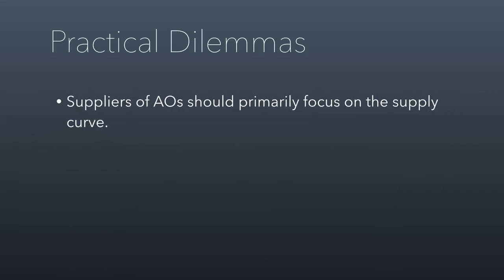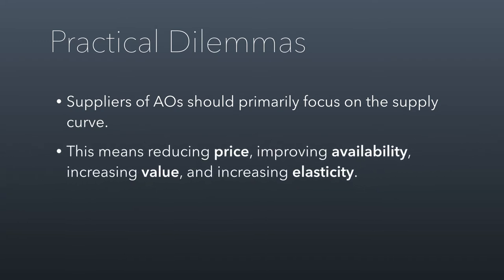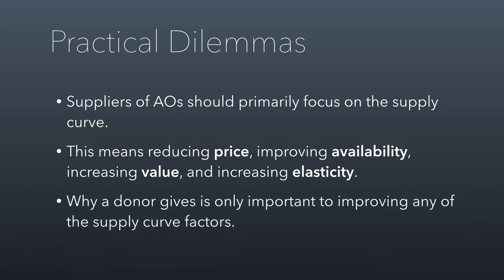So, suppliers of altruistic opportunities should primarily focus on the supply curve. They shouldn't be trying to change what donors want — they should instead be trying to provide donors more of what they want for cheaper. This means reducing prices, improving availability, increasing value, and increasing elasticity. Why a donor gives should only be an important factor if it improves any of these supply curve factors.